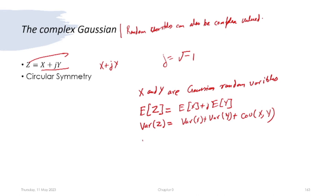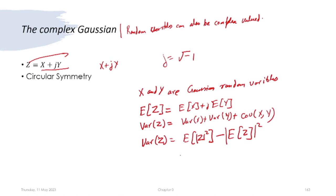Naturally, E[z] = E[x] + j·E[y] and Var(z) = Var(x) + Var(y). For complex variables, Var(z) = E[|z|²] − |E[z]|², where squares are replaced by mod-squares, and the covariance involves (z − E[z])(z − E[z])* — the conjugate term.